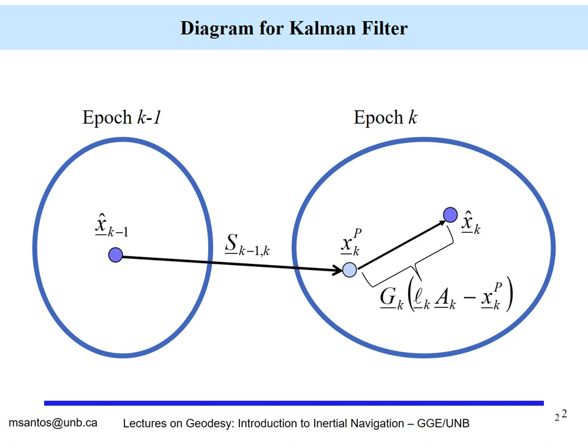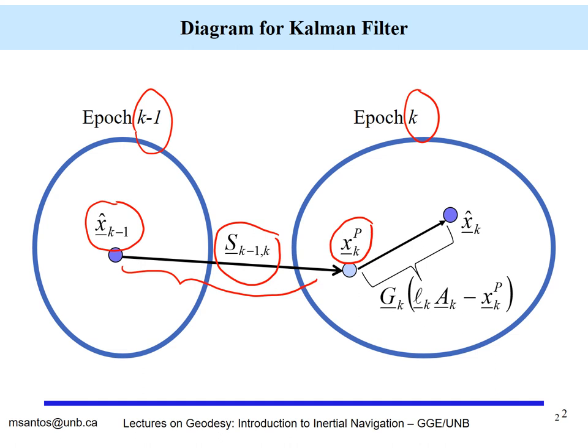Consider two epochs, k minus 1 and k. We have an estimate at epoch k minus 1. From this estimate we make a prediction to epoch k by means of a transition model that is represented by a matrix. This transition represents the physics of the whole process that connects epochs k minus 1 and k, and there are no observations involved here — it's just a mathematical model.